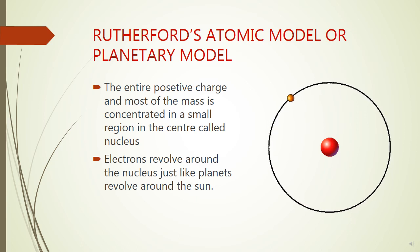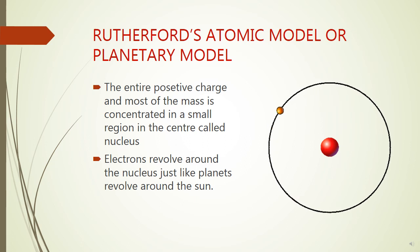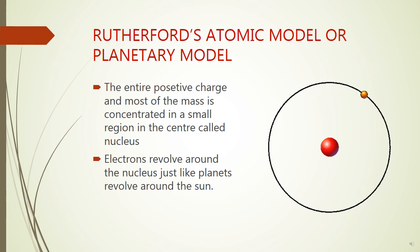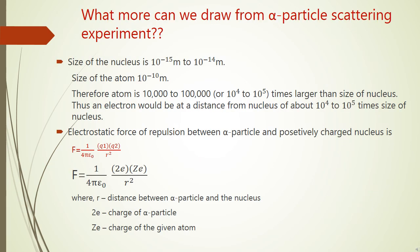After this experiment, Rutherford concluded that the plum pudding model is wrong and gave us a second atomic model called Rutherford's atomic model or the planetary model. According to this model, the entire positive charge and most of the mass is concentrated in a small region at the center called the nucleus, and electrons revolve around the nucleus just like planets revolve around the sun. Rutherford's experiment suggested that the size of the nucleus is about 10⁻¹⁵ to 10⁻¹⁴ meters.